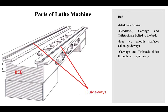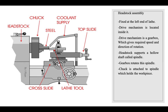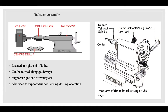The bed is usually made of cast iron; the headstock, carriage, and tailstock are all bolted to it. The bed has two smooth surfaces called guideways along which the carriage and tailstock slide. The headstock assembly is fixed at the left end; inside it is a drive mechanism — a gearbox that gives the required speed and direction of rotation. The headstock supports a hollow shaft called a spindle. A chuck attached to the spindle holds the workpiece. The tailstock is at the right end and can move along the guideways to support the right end of the workpiece and also support drill tools during drilling operations.